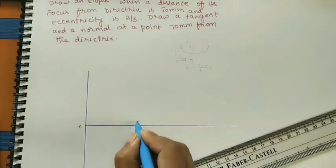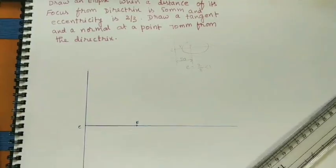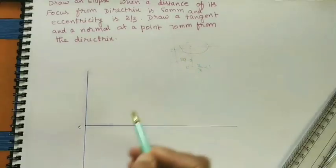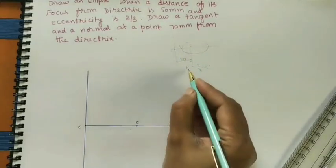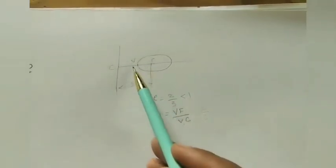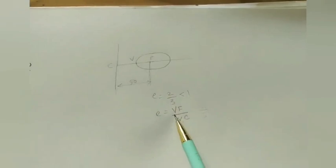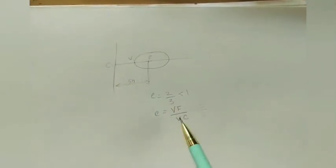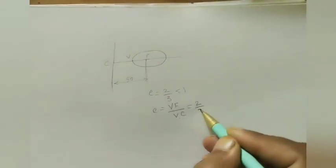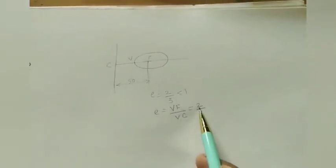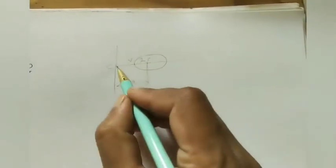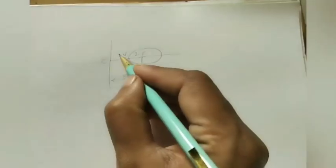This is the F point. Now after marking F, mark the V point. How to mark the V point in between CF? Eccentricity E is the ratio of VF distance — point to the focus — to VC distance — point to the directrix. This ratio is given as 2 by 3, meaning VF is 2 parts and VC is 3 parts.